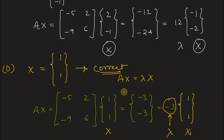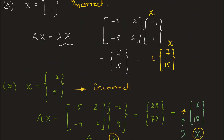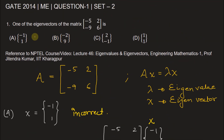So this is one way to find the answer — by checking all options directly. Another way is to simply compute the eigenvectors from scratch, which we all know how to do. Since we have checked all options, option D, that is [1, 1], is confirmed as the eigenvector. For more information on eigenvalues and eigenvectors, you can refer to the NPTEL course lecture number 46 on eigenvalues and eigenvectors in Engineering Mathematics 1 by Professor Jeetendra Kumar of the Department of Mathematics at IIT Kharagpur.